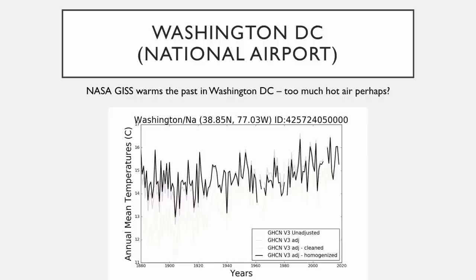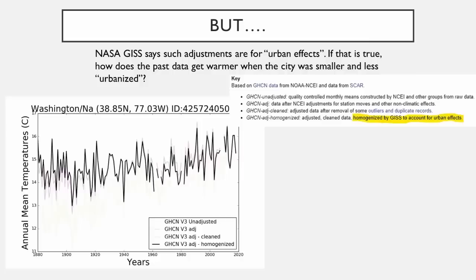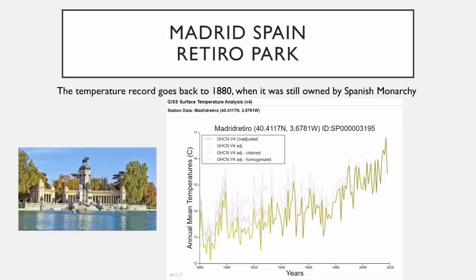Washington, D.C. — it doesn't look too alarming; it looks pretty flat. But they've actually made some changes to the past too, through an algorithm called homogenization. They do that to account for urban effects, but what they've actually done here is made the past warmer. The city was smaller 100 years ago — there were fewer people, less urban heat island effect. How do you rationalize that? I know of no way you can do that.